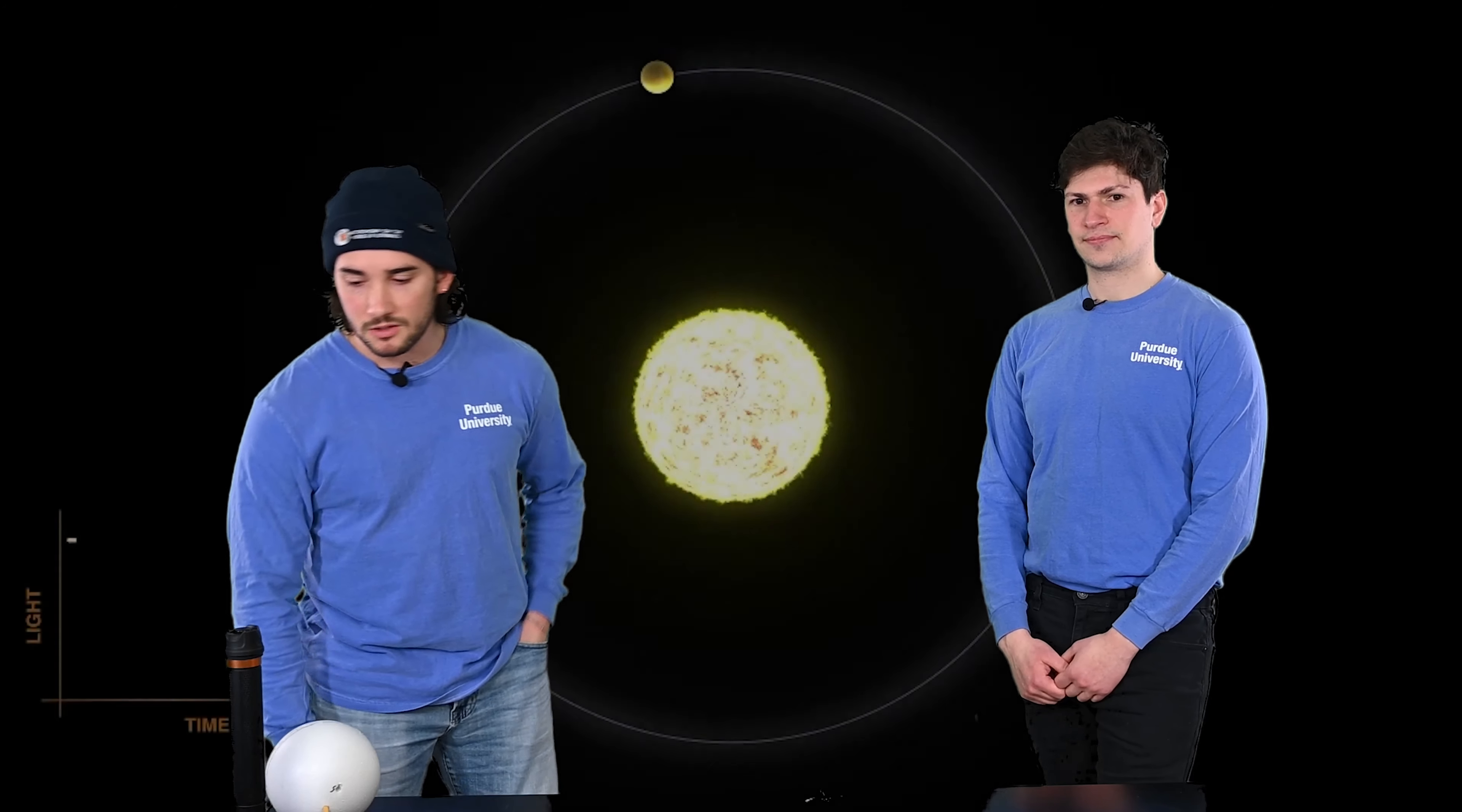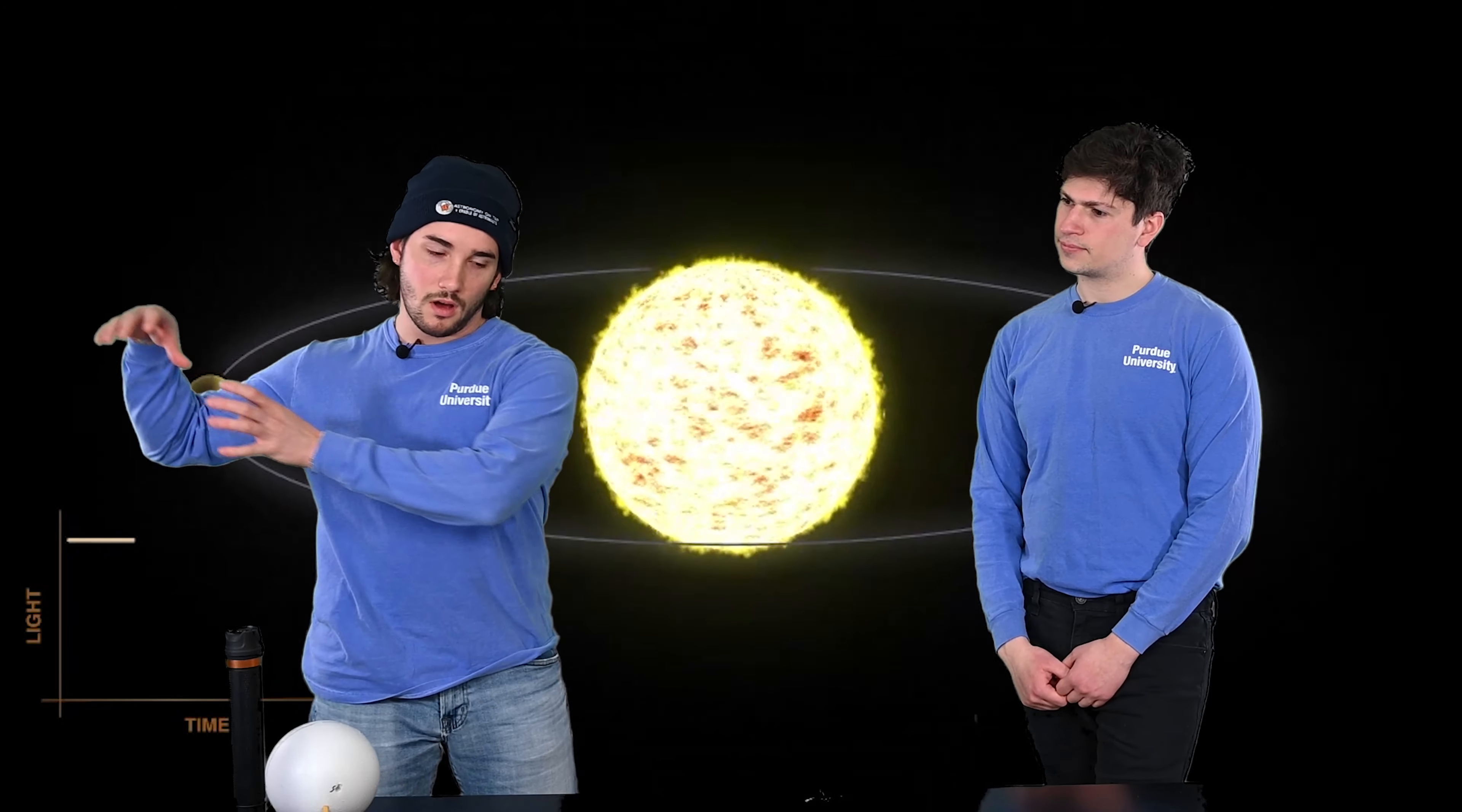Our second method we'll be discussing today is called the transit method. The transit method is when a planet is in between our telescopes and its host star. And as it passes in front of the star, it blocks some of that starlight which we can detect.